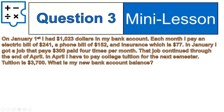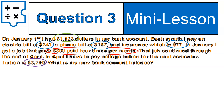All right, I'm back. Let's look at the pieces of information. The first piece is where are we starting — at $1,023. I have my expenses circled in blue and the income circled in red. These expenses are monthly, and the red income part is four times per month. There's also the big bill of $3,700 due at the end — that's my tuition for college.